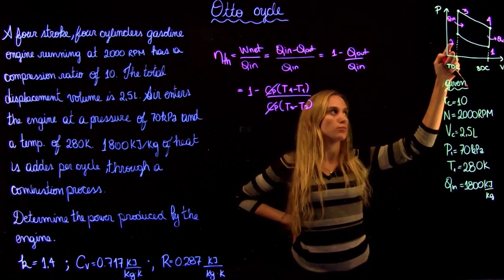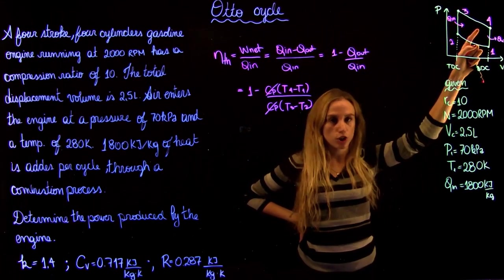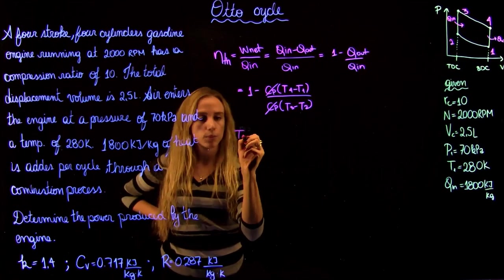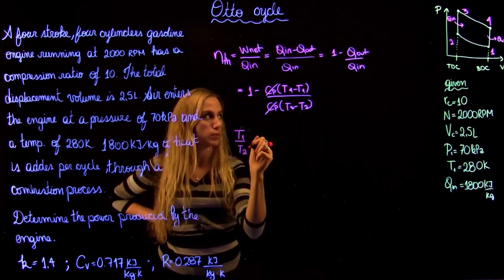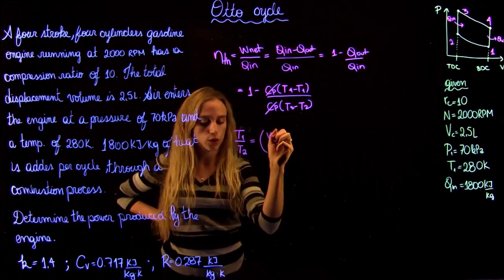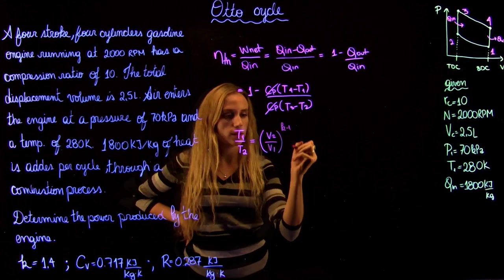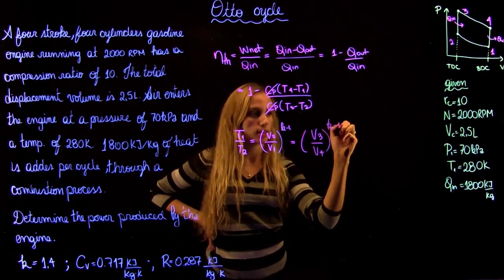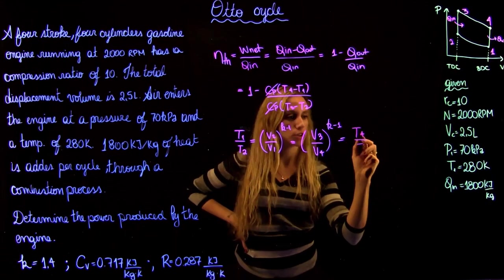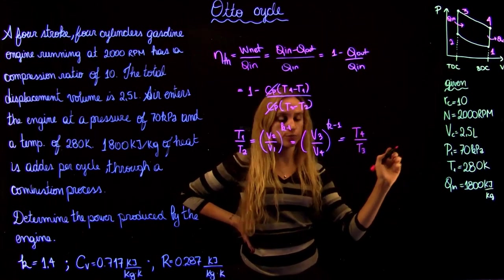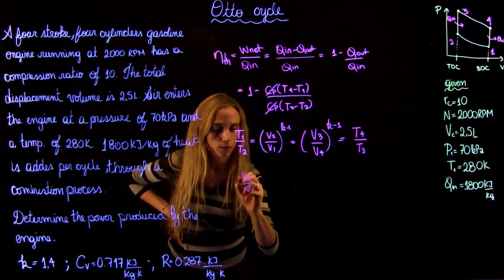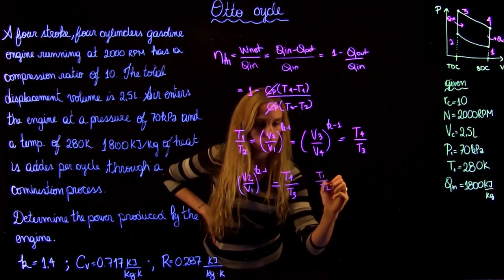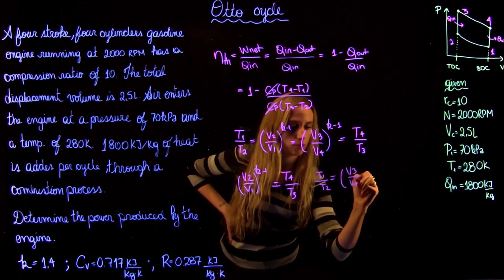The compression from 1 to 2 and the expansion from 3 to 4 are isentropic. Also, volume at 2 equals volume at 3, and volume at 1 equals volume at 4. Using the isentropic relation, T1 over T2 equals (V2 over V1)^(k−1). Since V2 equals V3 and V1 equals V4, we can also write T4 over T3 equals (V3 over V4)^(k−1) for the isentropic expansion.